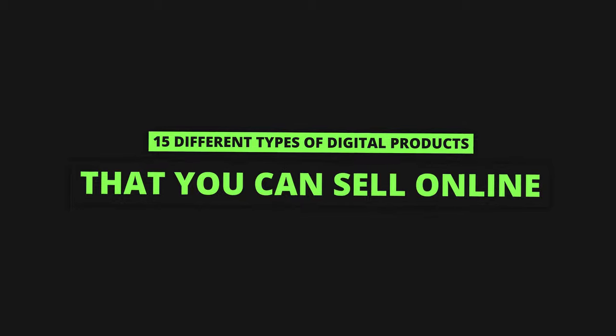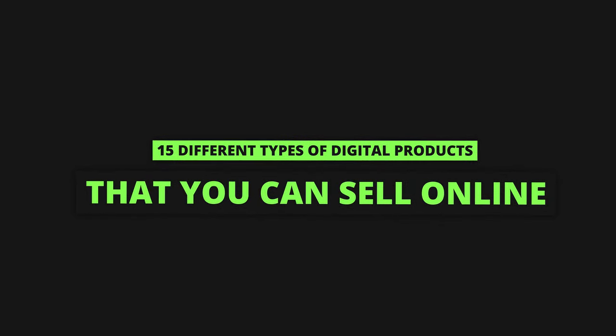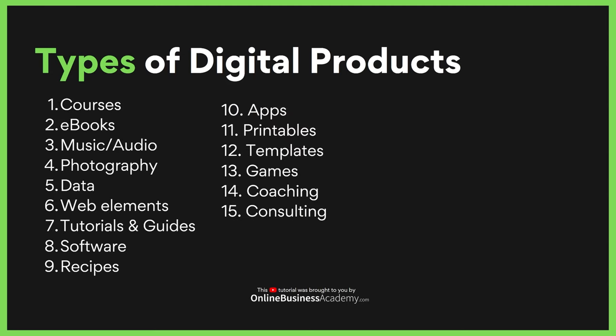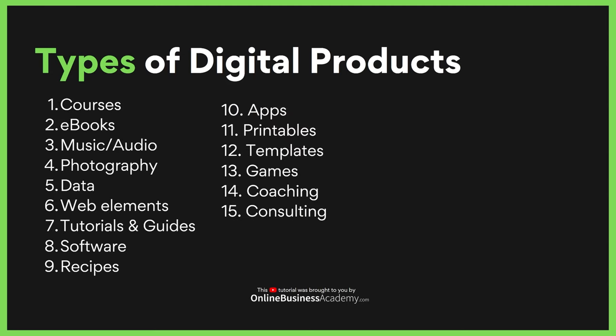What are the 15 different types of digital products you can sell online and build a profitable online business around? We have courses, eBooks, music and audio files, photography, data, web elements, tutorials and guides, software, recipes, apps, printables, templates, games, coaching, and consulting.